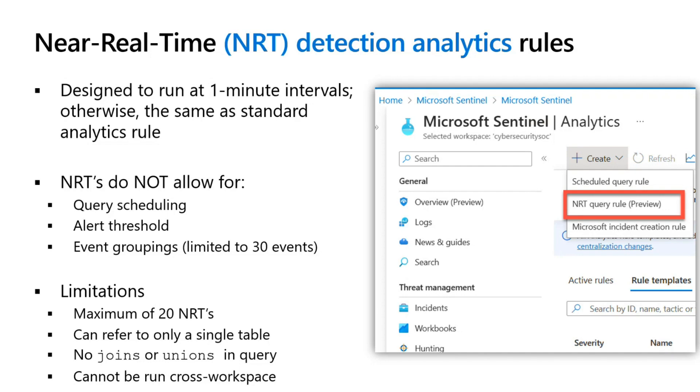Limitations for NRT rules: you can run a maximum of 20 near real-time query rules in your environment. It can only refer to a single table, for speed purposes. There's no ability to do joins or unions in your query, and you can't run them across workspaces.